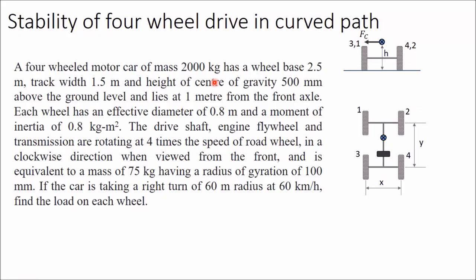In this video we will discuss stability of a four-wheel drive when moving in a curved path. The example is a four-wheeled motor car of mass 2000 kg, so W is equal to 2000 into 9.81 Newton. It has a wheel base of 2.5 meter, so y is equal to 2.5 meter. Track width is 1.5 meter, so x is given as 1.5 meter. The height of center of gravity is 500 mm above the ground level, so h is given as 0.5 meter.